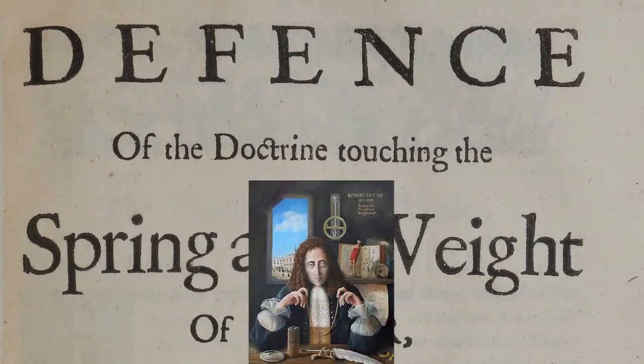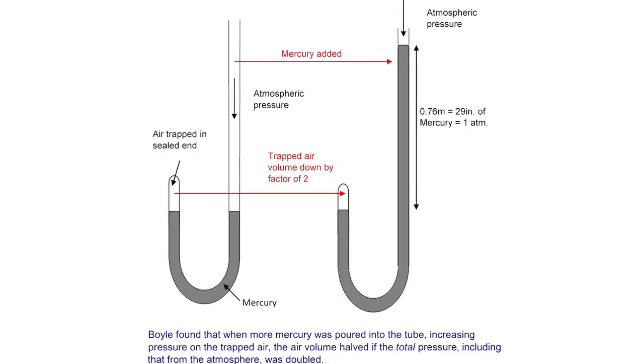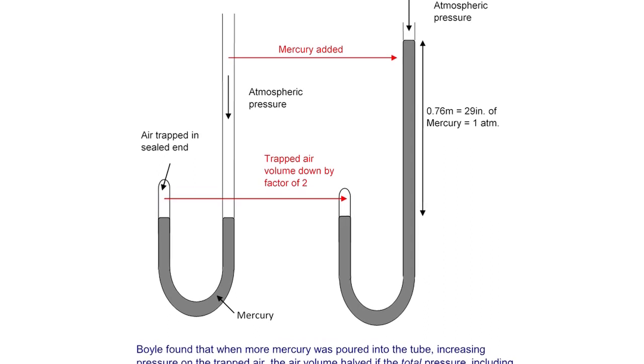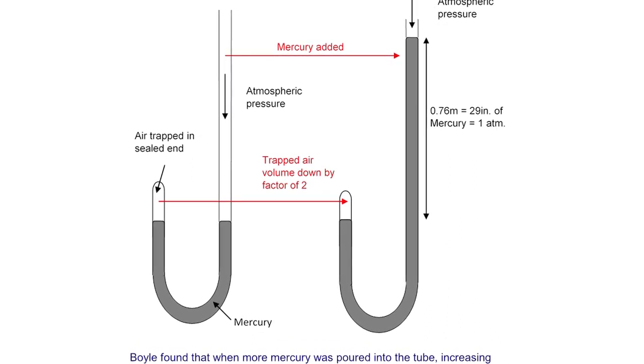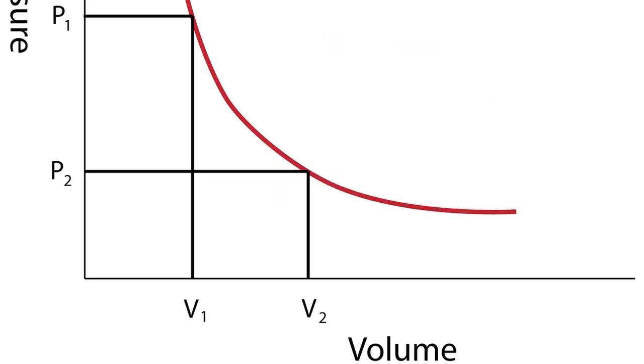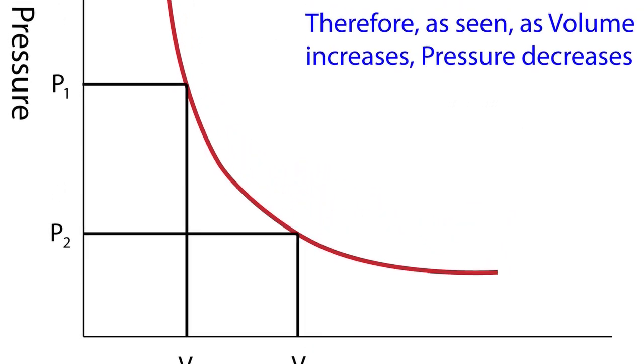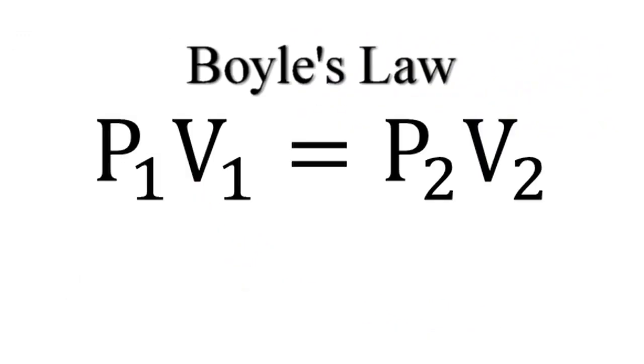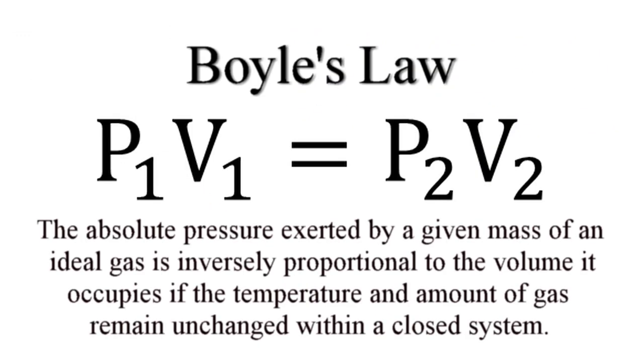and after pouring mercury from one side, he forced the air on the other side to contract under the pressure of the mercury. He repeated the experiment several times using different amounts of mercury and discovered that under controlled conditions, the pressure of a gas is inversely proportional to the volume occupied by it. This became known as Boyle's Law and is stated as, the absolute pressure exerted by a given mass of an ideal gas is inversely proportional to the volume it occupies if the temperature and amount of gas remain unchanged within a closed system.